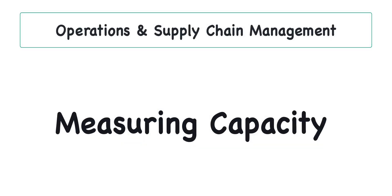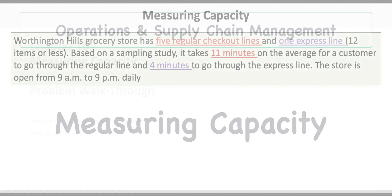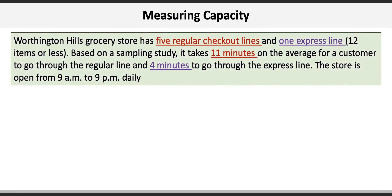This video will take you through a short problem on capacity management of checkout lines in a grocery store. Worthington Hills grocery store has five regular checkout lines and one express line.